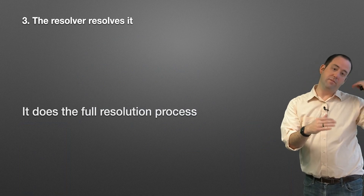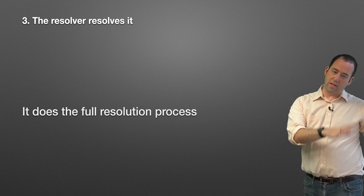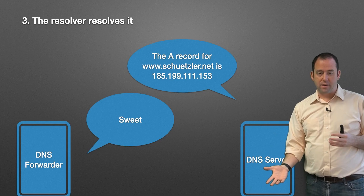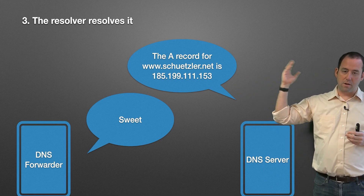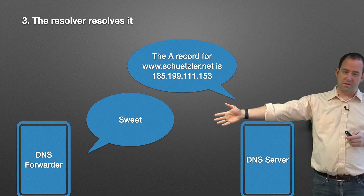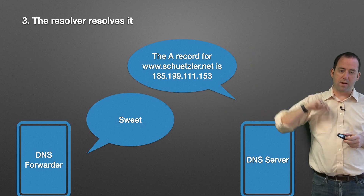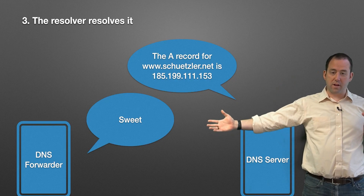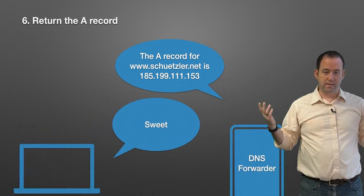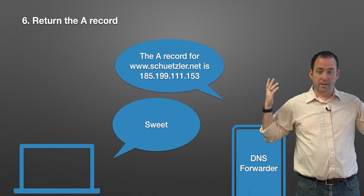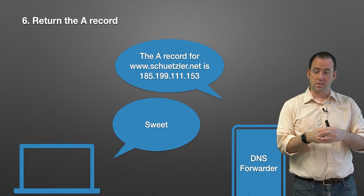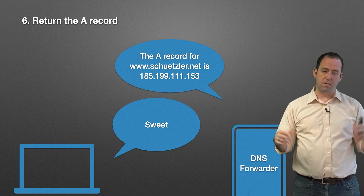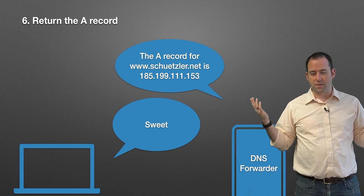The DNS resolver that's going through the full process goes through that exact full resolution process we just talked about: talking to the root, talking to the top level domain, talking to the name servers, and finally getting those correct records. Once it goes through all that, it responds — it turns the A record back over and says, here, DNS forwarder, here's the A record for the thing you asked for. And once it has that, it turns it back over to your computer, just like the DNS full resolver did.